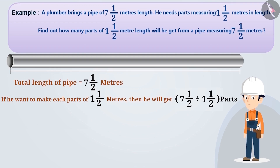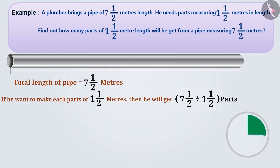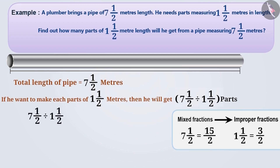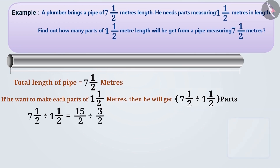Can you tell us how this division can be solved? If the division has mixed fractions, we have to first convert them into improper fractions. The improper fraction of seven and a half will be fifteen by two and the improper fraction of one and a half will be three by two. That is, seven and a half divided by one and a half is equal to fifteen by two divided by three by two. We will keep the first number exactly the same and multiply it by the reciprocal of the second number. The reciprocal of three by two is two by three.